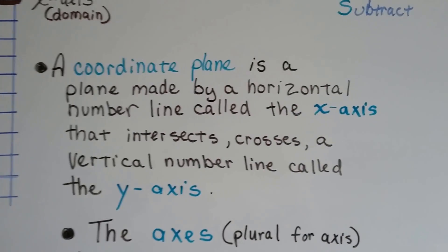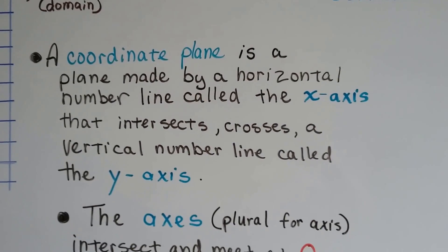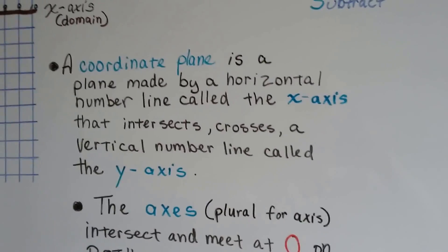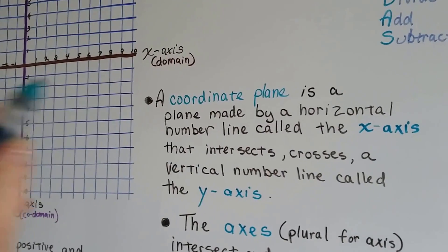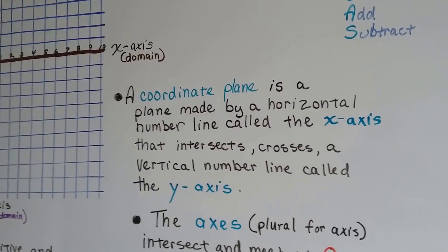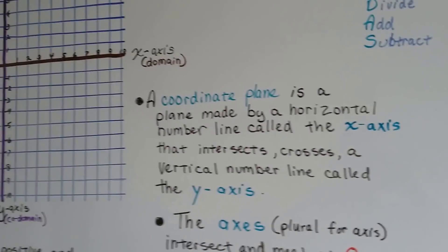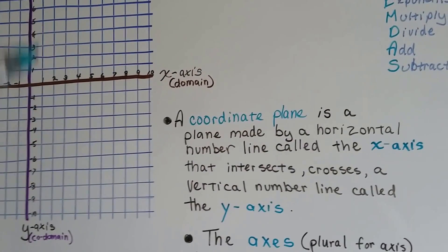A coordinate plane is a plane made by a horizontal number line called the x-axis. That's the horizontal one. That means it's like the horizon, going straight across. And it intersects, crosses, a vertical number line called the y-axis.